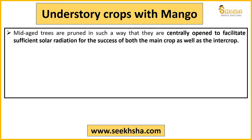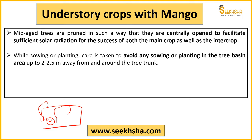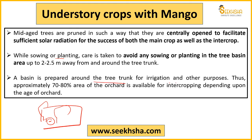You can also grow understory crops with mango. Understory crops are basically low-height crops grown in the space between mango trees. Your mango trees' canopy should be pruned and trained such that the solar radiation required by the understory crops keeps reaching them. When planting understory crops, do not plant them right in the tree basin or in and around the trunk — keep some space. A basin is prepared around the tree trunk for irrigation and other purposes. Thus approximately 70 to 80 percent of the orchard area is available for intercropping.